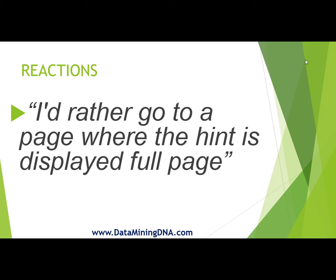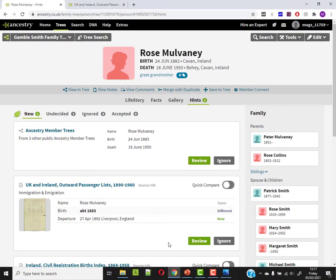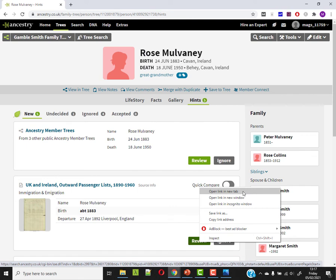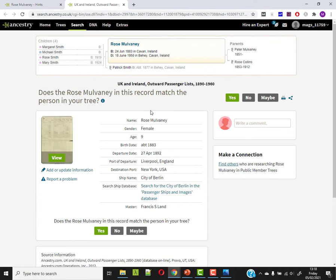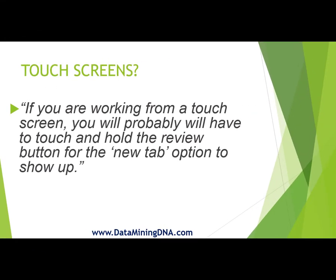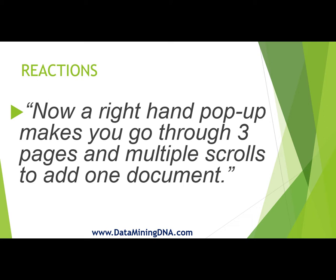I just want to give you a quick tip that you can do exactly that. On a laptop or desktop, right-click the review button instead of clicking it, and you get a pop-up menu — choose 'Open link in new tab.' Regardless of whether you're using Chrome or another browser, a right-click will give you that option. Here's my second tab opened, and this probably looks very familiar because this is pretty much the old version. Now, I'm not getting the side-by-side comparison, so you do have to toggle back and forth. If you're working from a touch screen, you will probably have to touch and hold the review button for the new tab option to show up. That right-click new tab may mitigate this particular problem — people are saying the right-hand pop-up makes you go to three pages and multiple scrolls to add one document.